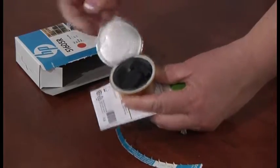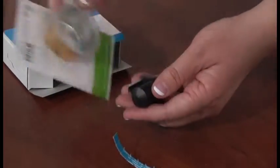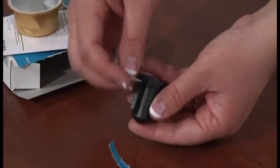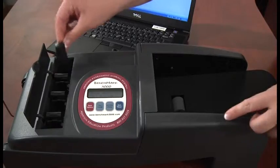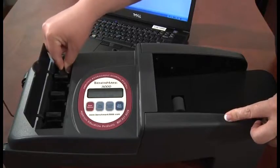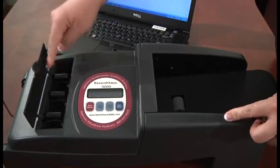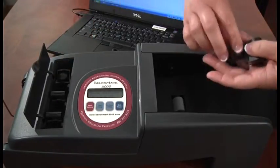Open the packages to the new ink cartridges and discard the packing materials. Make sure to remove the protective tape that covers the copper colored plate of each ink cartridge. Insert the new ink cartridges into the scanner with the copper side away from you. There is a flat tab on the round ink cartridge which should be facing up.